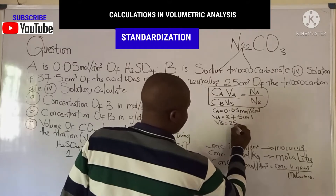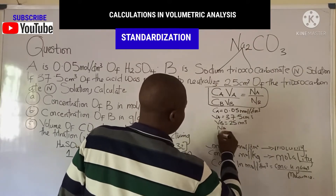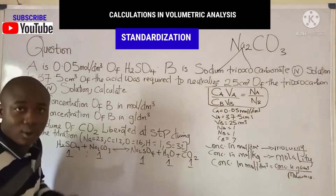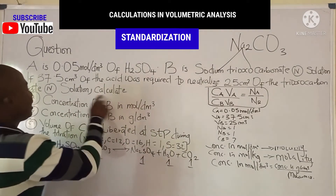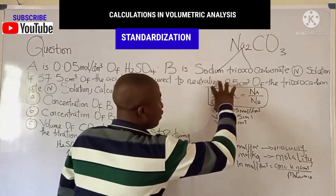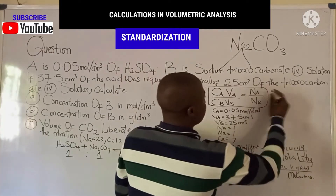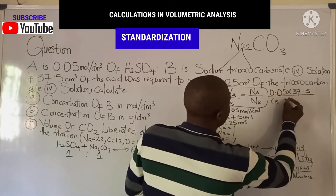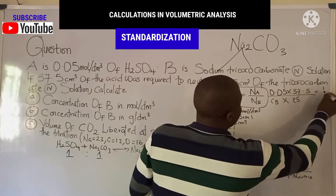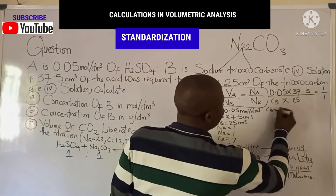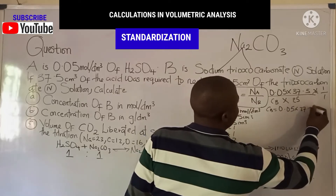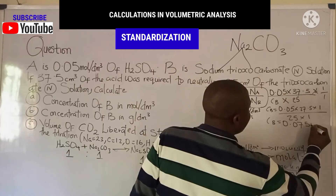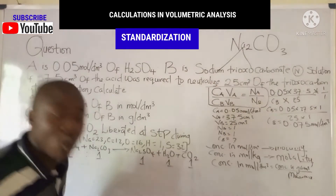The concentration of the base Cb is what we need to find. Using the titration formula: Ca × Va over Cb × Vb = na over nb, substituting gives 0.05 × 37.5 over Cb × 25 equals 1 over 1. Solving for Cb: Cb equals 0.05 × 37.5 × 1 over 25 × 1, which gives Cb equals 0.075 moles per dm³.